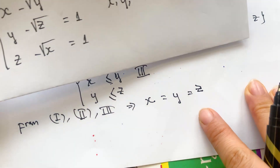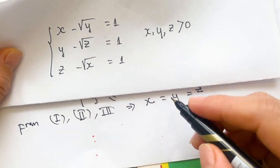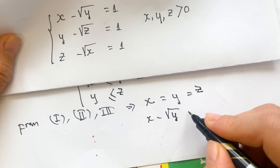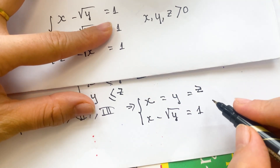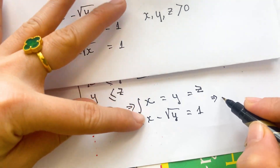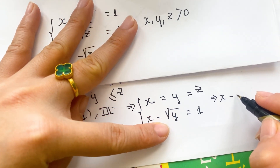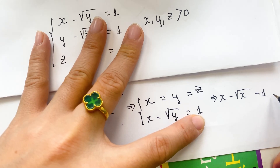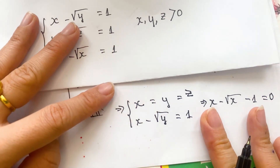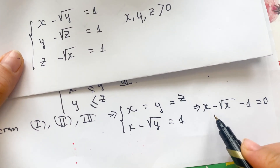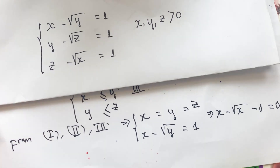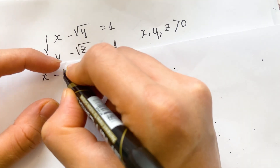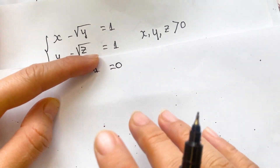Everyone look at the original equation. We have x minus square root of y equals one. Since x equals y equals z, we have x minus square root of x equals one. So we can write x minus square root of x minus one equals zero. We need to find the solution of this equation.